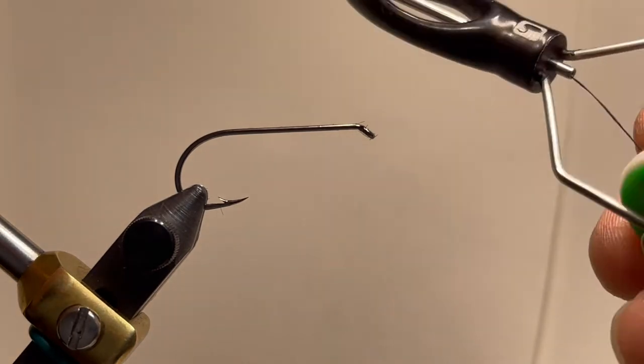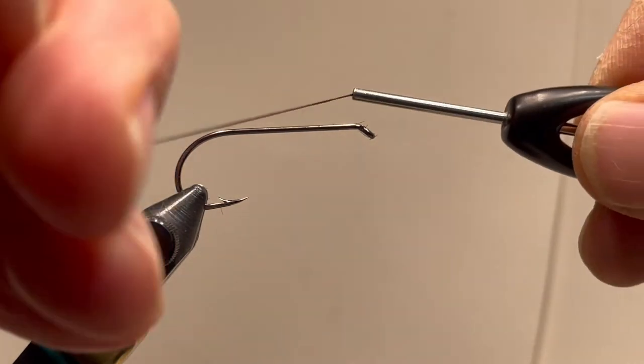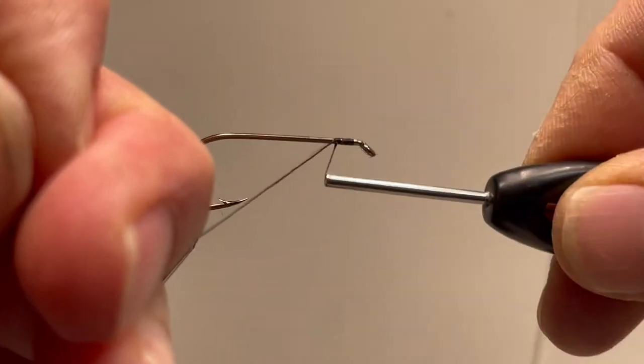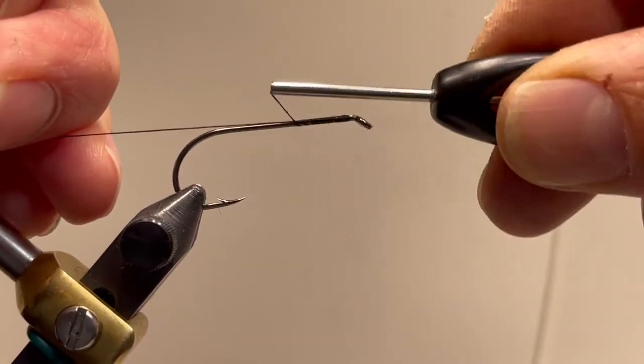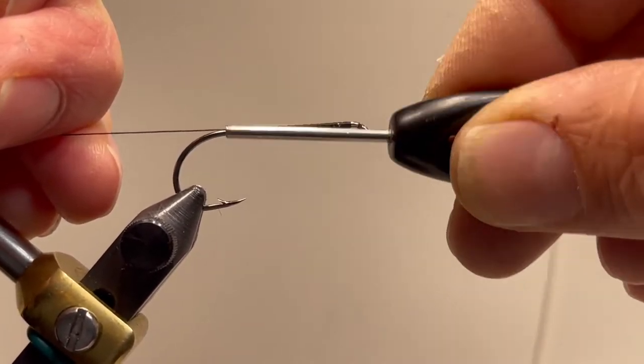Today we're going to be tying a Mormon Cricket inspired by Ken Burkholder. We'll begin by wrapping the thread onto the hook all the way down the shank and then back up.